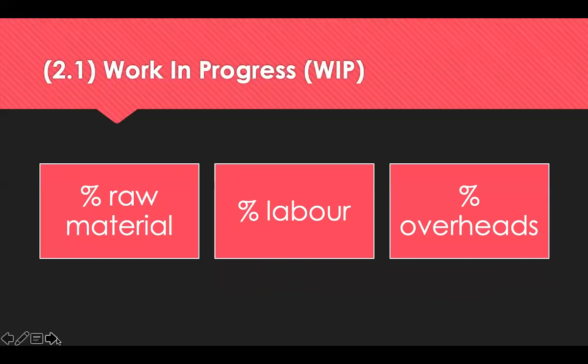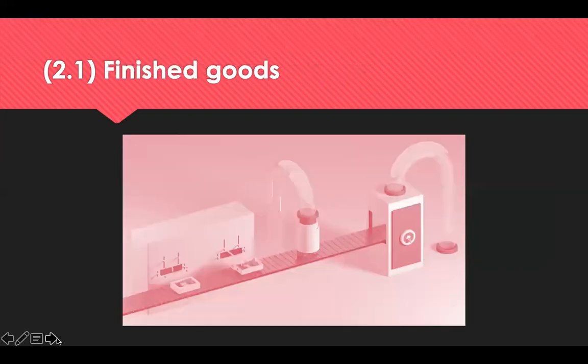In supply chain management terms, work in progress describes partly finished goods awaiting completion. It refers to raw materials, labour, and overheads incurred for products at various stages of the production process. Work in progress is a component of the inventory asset account on the balance sheet, where costs are subsequently transferred to the finished goods account and eventually to the cost of sales. The figure reflects only the value of products at some intermediate production stage, excluding raw materials not yet incorporated into an item for sale, and also excluding finished products held in inventory in anticipation of future sales.